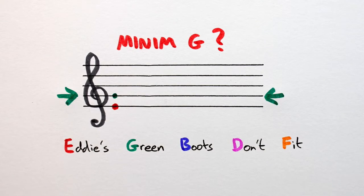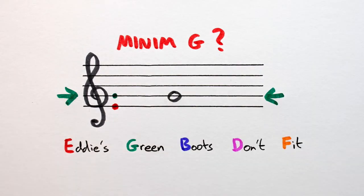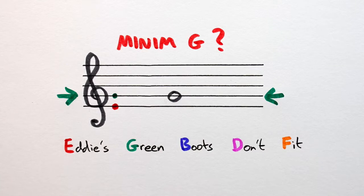It's a minim, so we need to draw an empty note head, like so. And now for the stem. Remember, any note below the middle line will have its stem going up from the right side. And boom! One minim G, done!